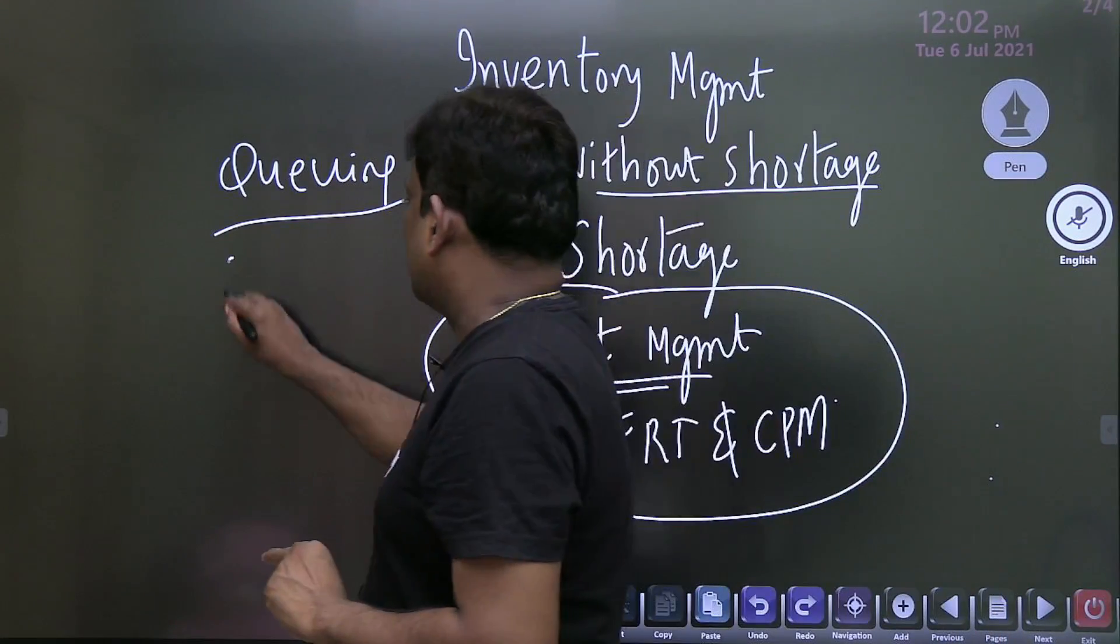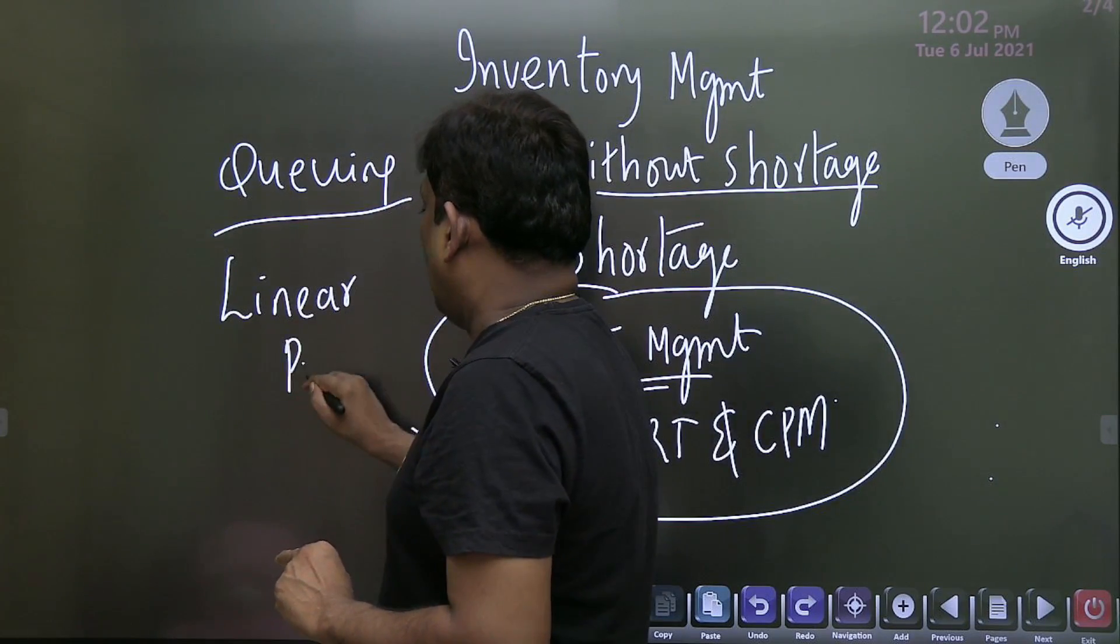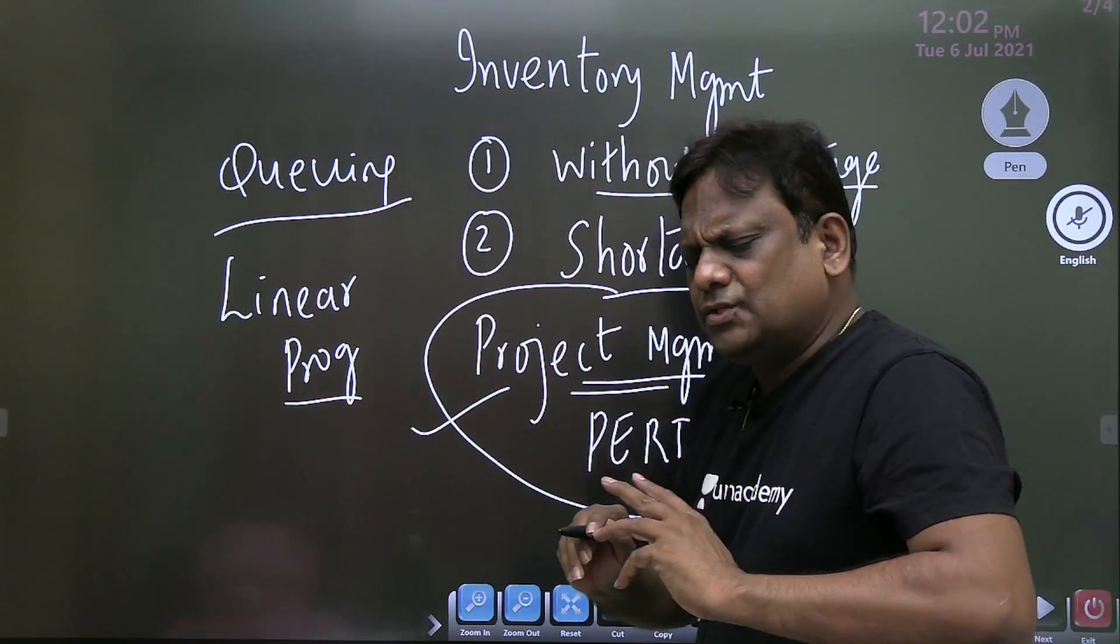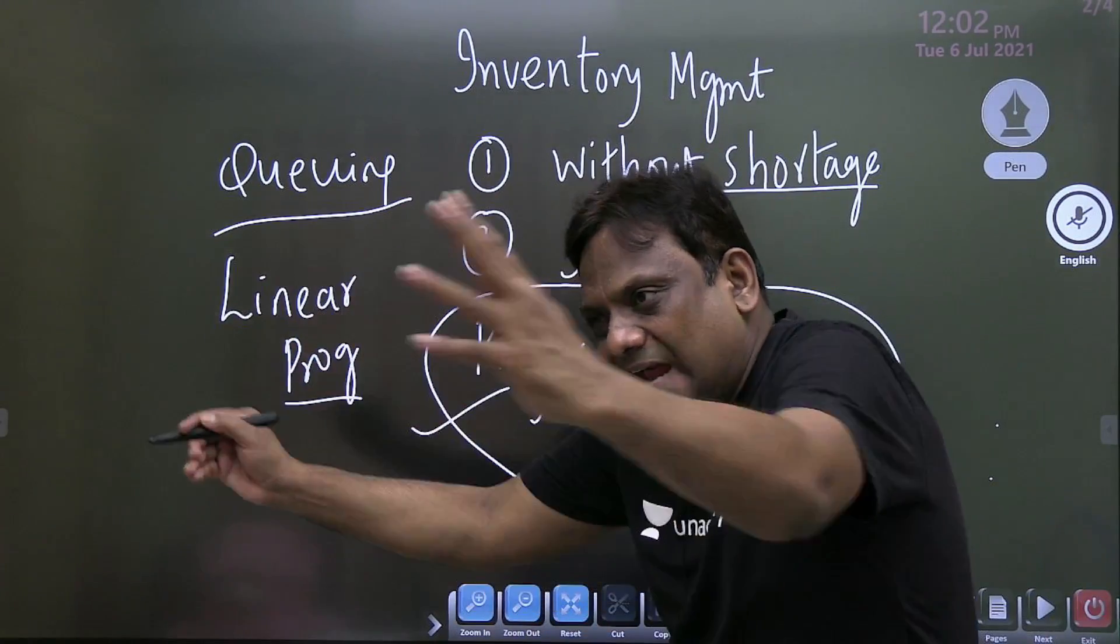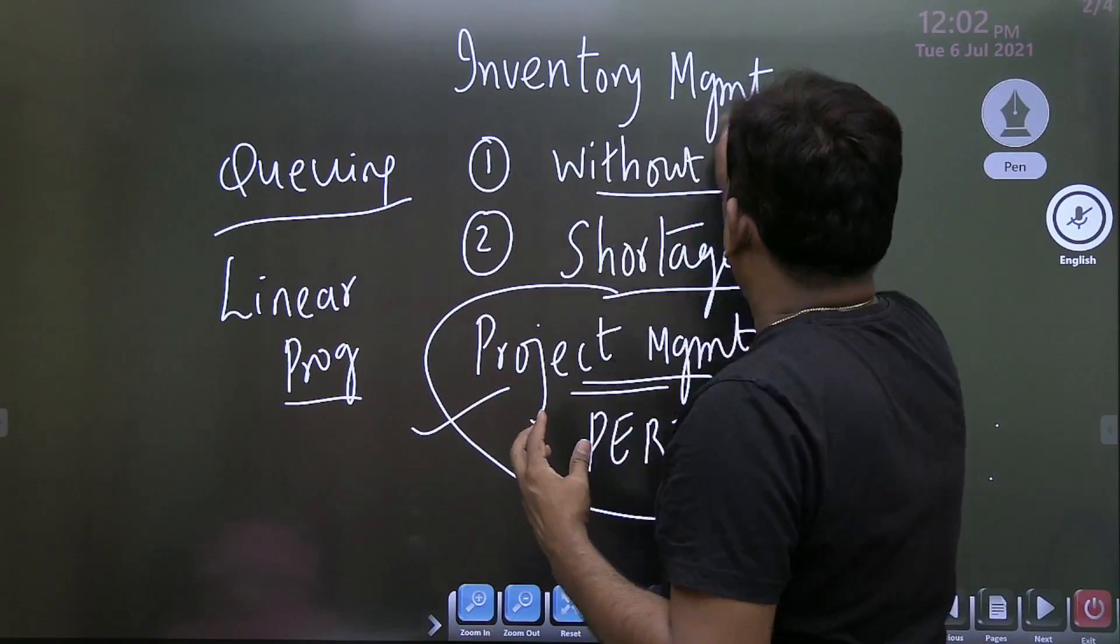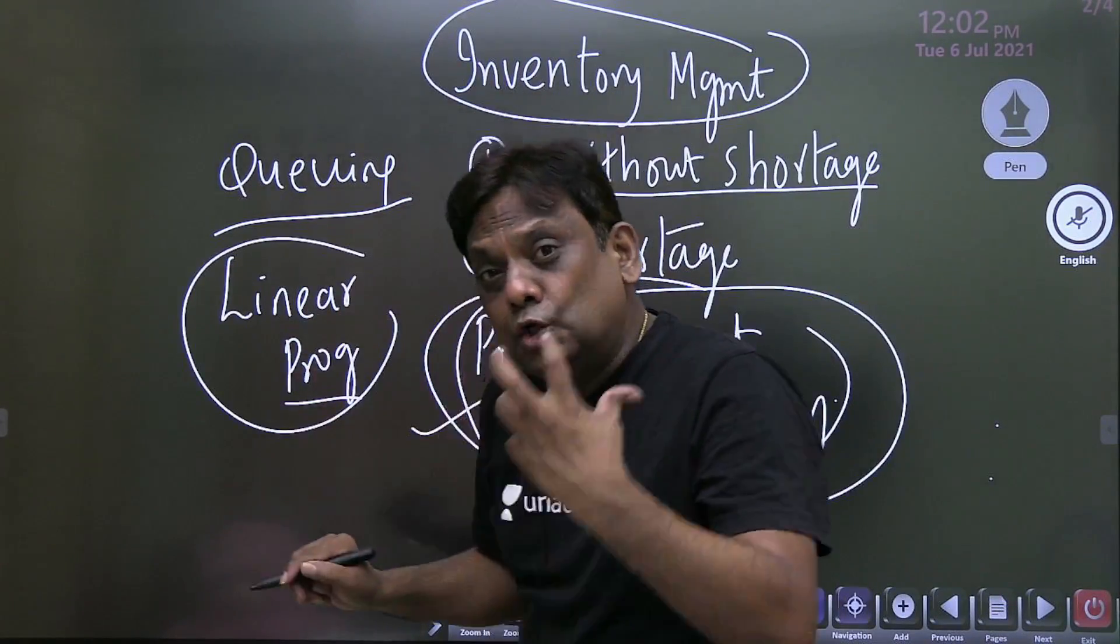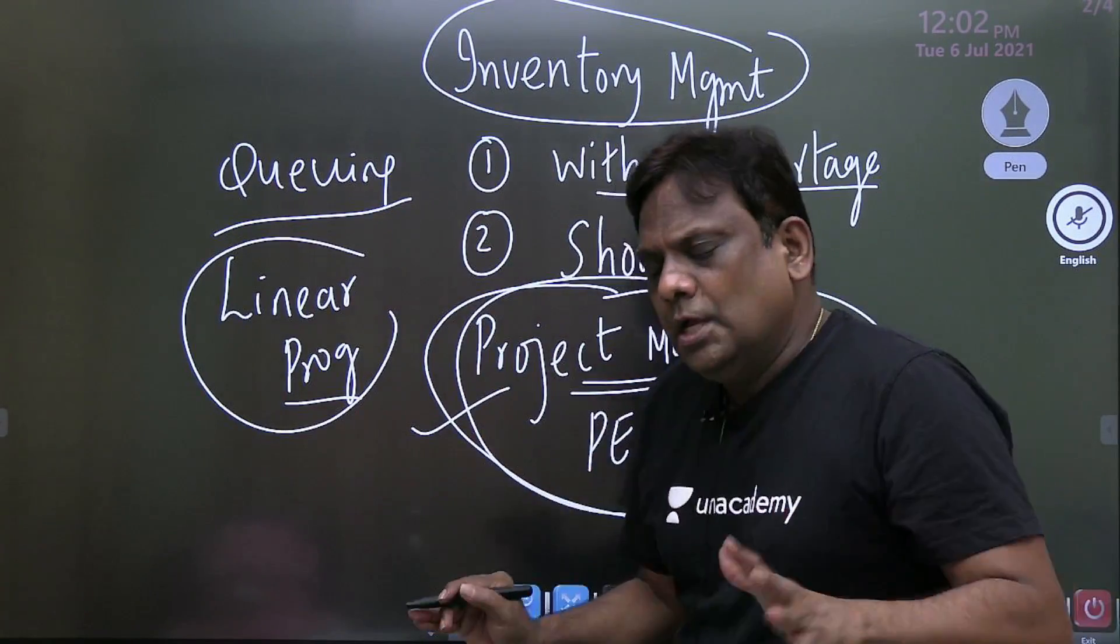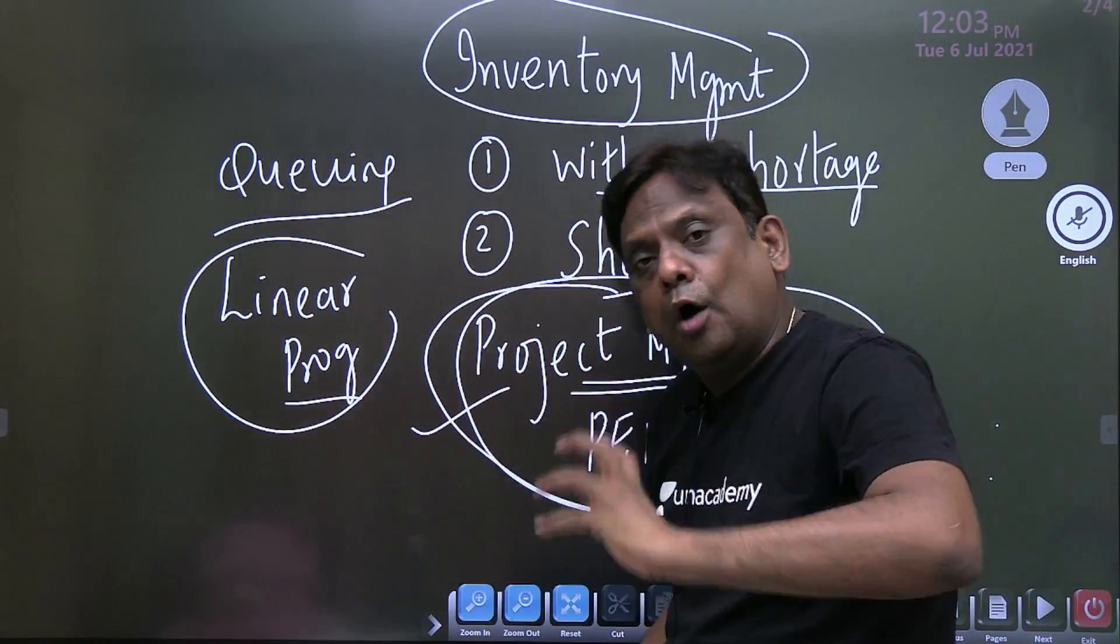Then after that, we'll move to linear programming. And this is again, a very very important part. So I consider in industry, so you cannot say that this is important, this is important. But if you see the statistics of previous papers, and I found this project management, linear programming, these are dominant areas. I'm not saying these alone are important. No. So for us, complete subject is important. But these are dominant areas.